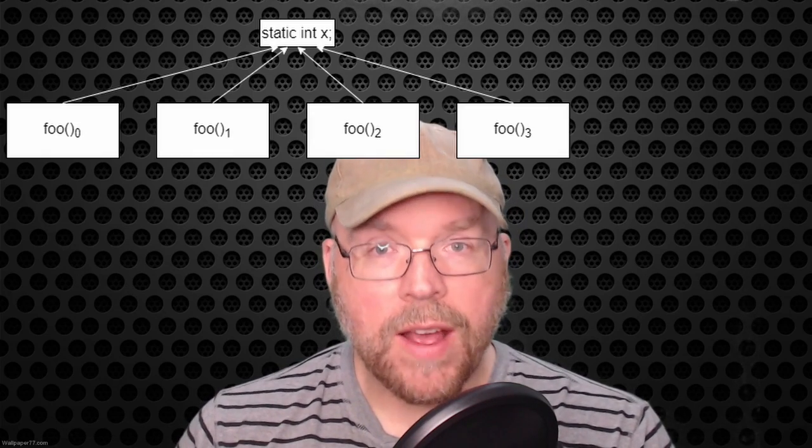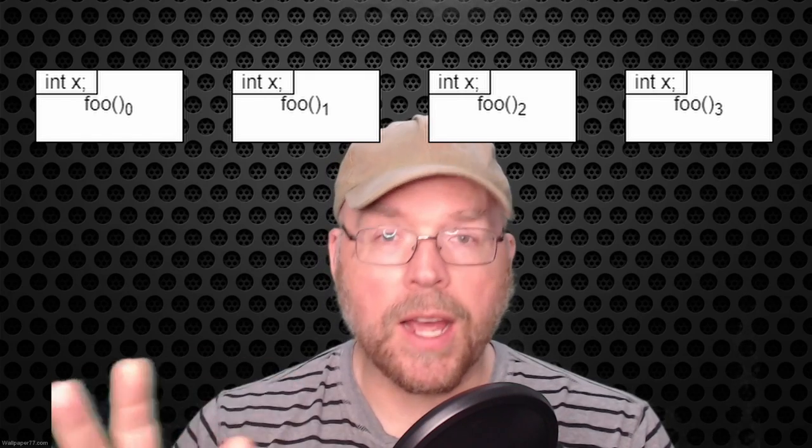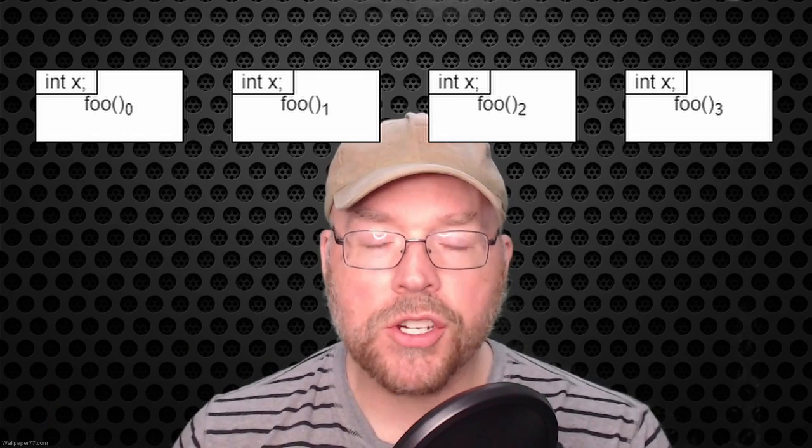Hi guys, welcome back, it's Professor Hank. In this video we're going to talk about static local variables and functions in C++. The key thing to keep in mind is that static local variables are local variables that can retain their value between calls to that function. Usually when you have a variable defined inside a function, after the function finishes executing that variable is gone — its lifetime is the lifetime of the function — but with a static local variable it lives on.